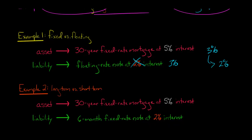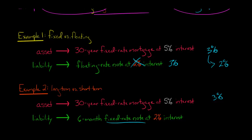At 2% interest, we've got a 3% margin, and there's nothing floating rate — so what's the problem? In six months, when this matures, let's say interest rates go up. When it matures, the bank needs to get another fixed rate note, but interest rates have gone up, and to get a new fixed rate note it would now be 2.4% interest.